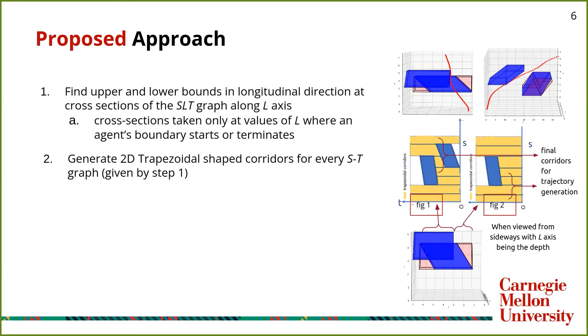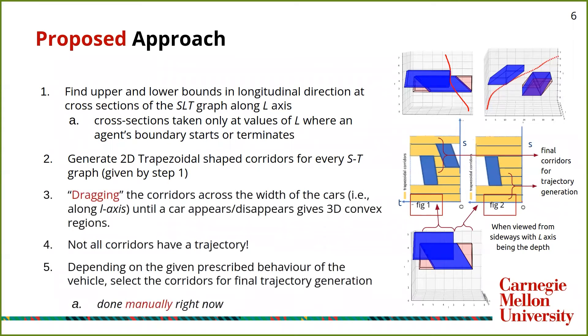We can construct trapezoidal corridors in any of these 2D slices using previously done research. We drag these corridors along the lateral axis, and we end the dragging whenever a new car is encountered. This gives us 3D trapezoidal prism-shaped corridors, which are all convex in nature.